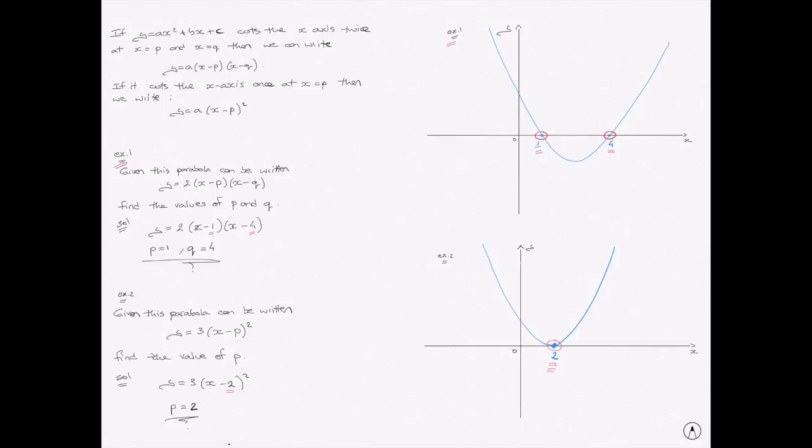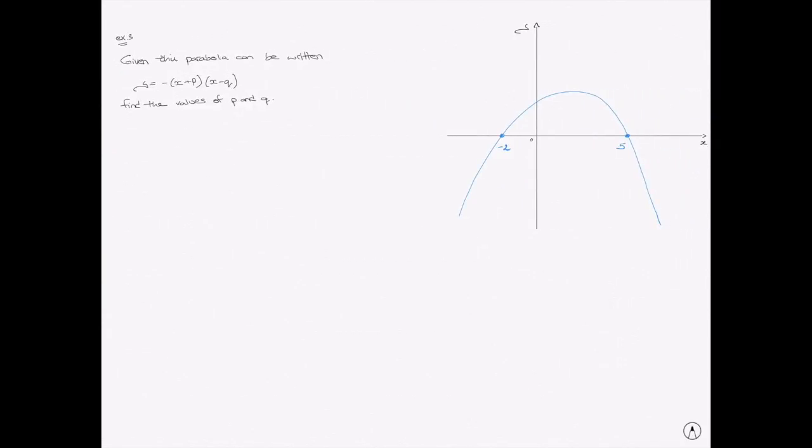Let's look at one more example. Here we have a parabola. We can see in this case it's concave down. And we're told in this example, given the parabola can be written as negative x plus p times x minus q, find the values of p and q.